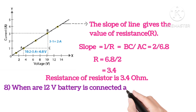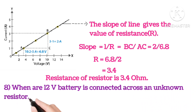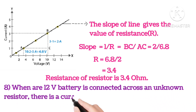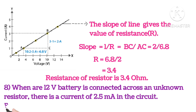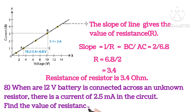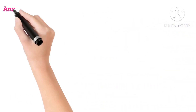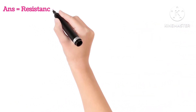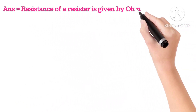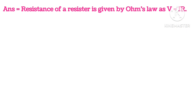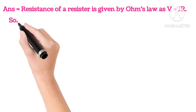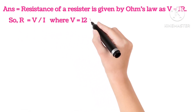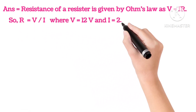Eighth: when a 12V voltage battery is connected across an unknown resistor, there is a current of 2.5 mA in the circuit. Find the value of resistance of resistor. So the resistance of the resistor is given by Ohm's law, that is V equals I R, so R equals V upon I.